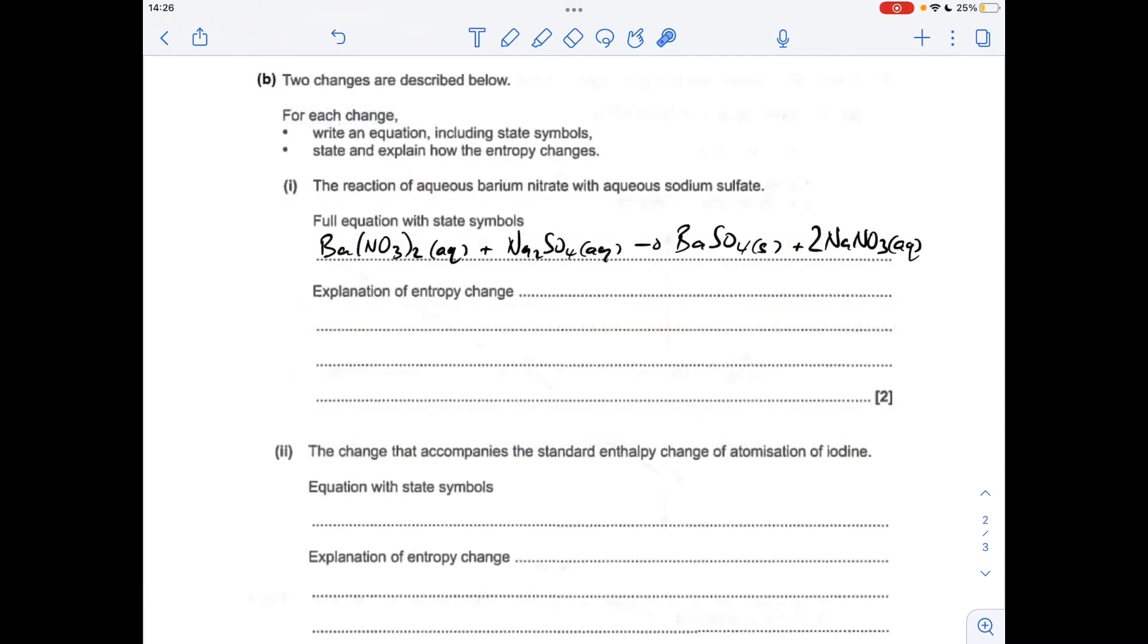For part b, there's the equation for the reaction between aqueous barium nitrate and aqueous sodium sulfate. Remember this is used to test for the aqueous sulfate ion because it gives this white precipitate of barium sulfate. So the entropy change is going to be negative because there's less disorder on this side because of this solid.